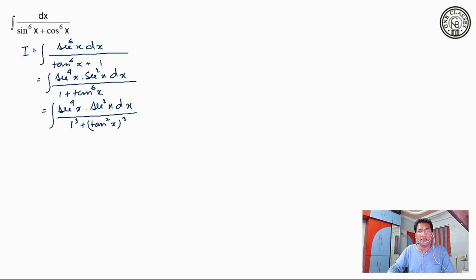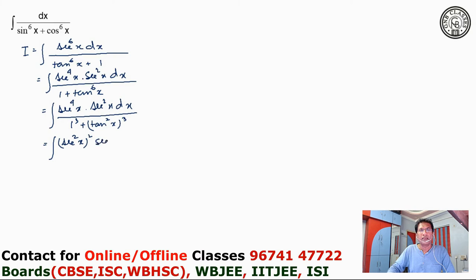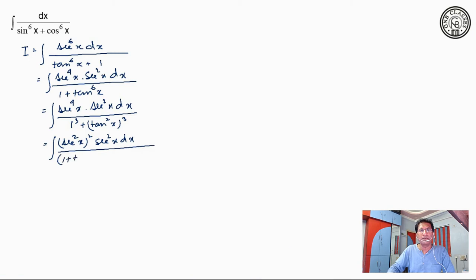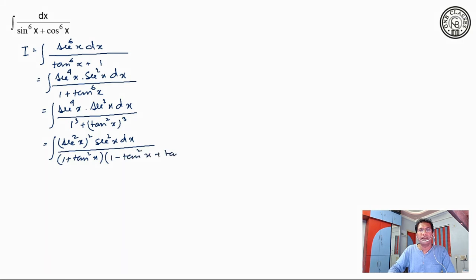I am applying the a cube plus b cube formula in the denominator. We are having sec square x whole square, sec square x dx, and the a cube plus b cube formula: a plus b into a square minus ab plus b square.